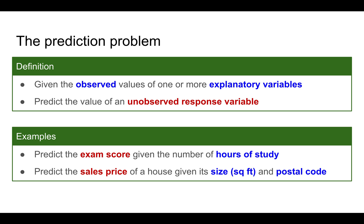One of the key applications of linear regression is to solve the prediction problem. Let's say you have certain observed values of some explanatory variables, and you want to predict the value of an unobserved response variable. For example, you might want to predict a student's exam score given how many hours the student studied, or the sales price of a house given the size and postal code.